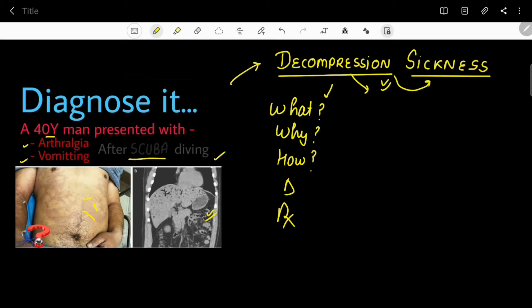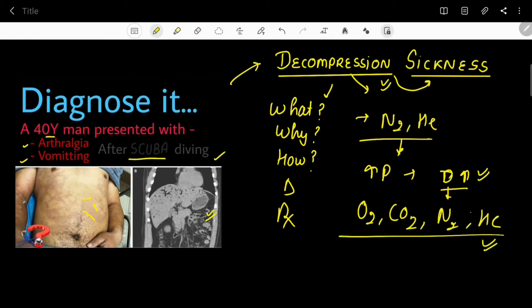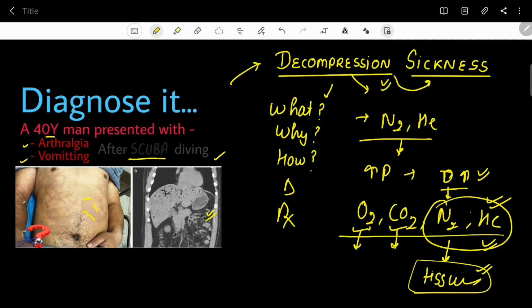The normal breathing gas used in these settings contains nitrogen and helium as diluents. When pressure increases, all inhaled gases dissolve more readily — this includes oxygen, carbon dioxide, nitrogen, and helium. Oxygen and CO2 are utilized or excreted by the body, but nitrogen and helium accumulate in the tissues and just get stored inside the body.